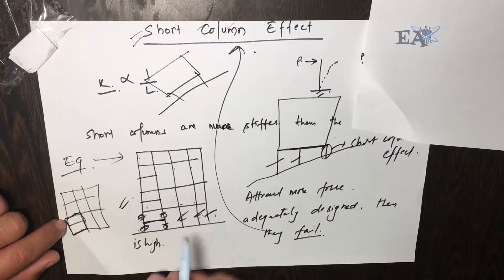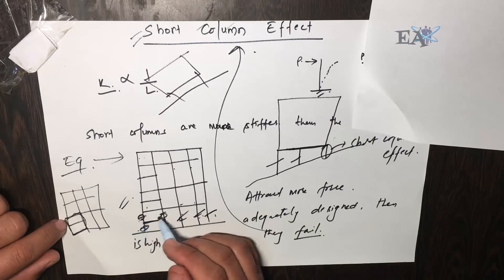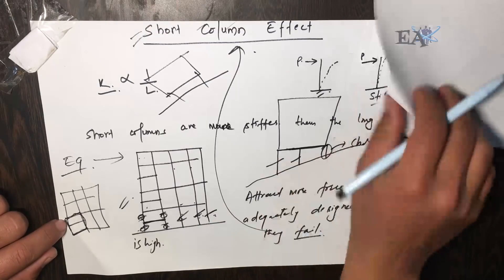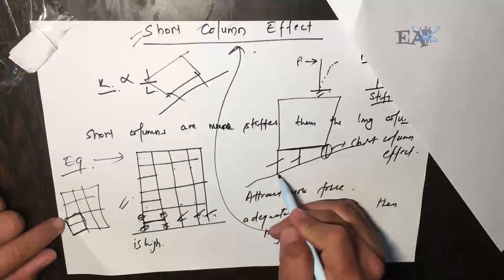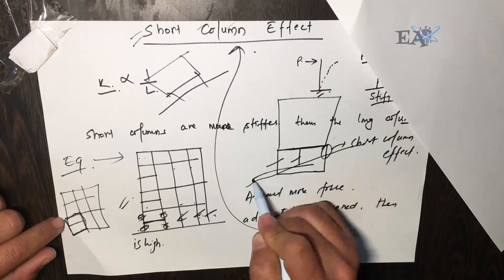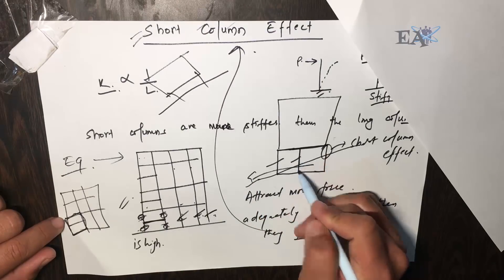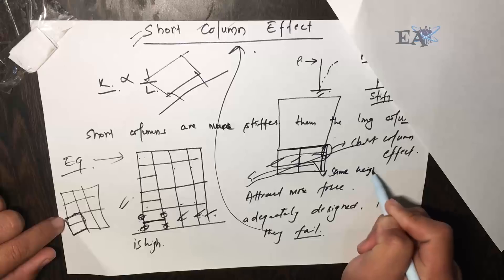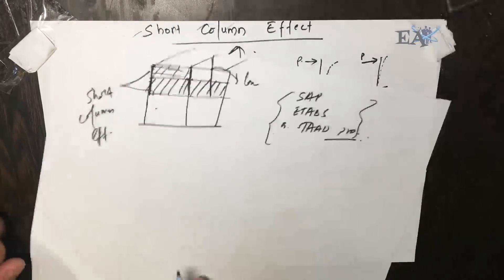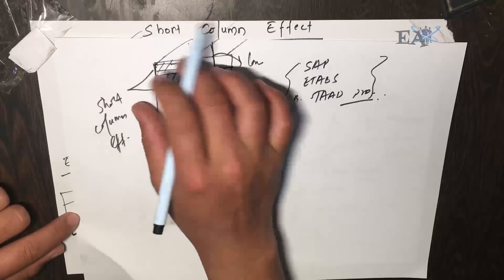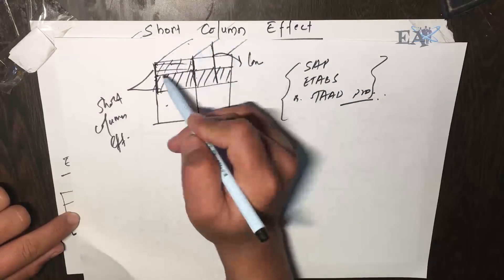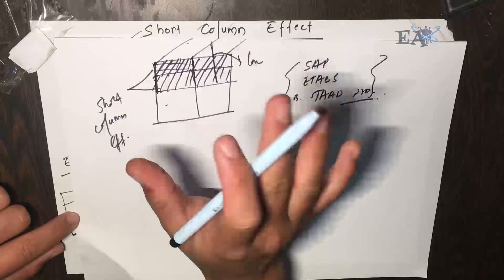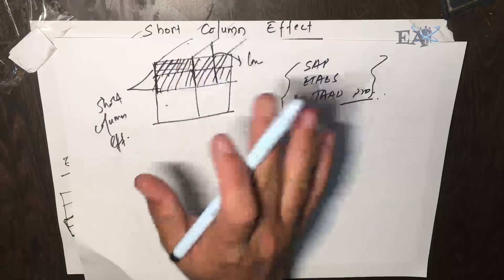In this particular case, what you can do is adjust the position of the beam so that these columns don't have a high shear value. For sloped land, one solution is to cut that portion of the slope and take the columns into the ground so all three columns have the same height. Another option is to change the architecture of the building and raise the wall to the same level.